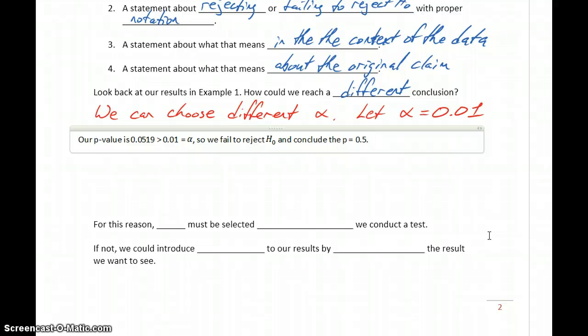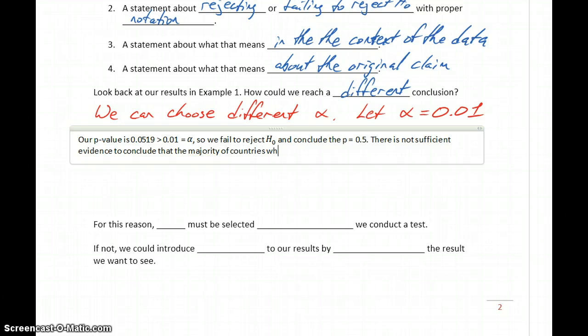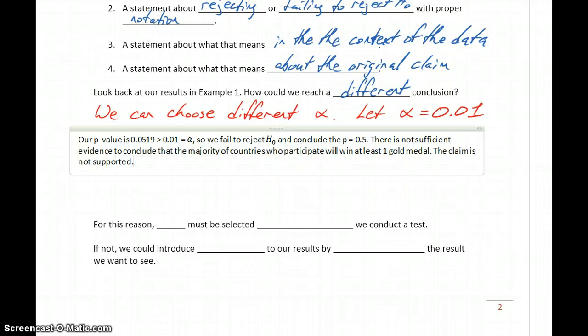So in this case, changing that alpha value leads us to the opposite decision about our null hypothesis. So we'd be saying there is not sufficient evidence to conclude that the majority of countries who participate will win at least one gold medal. So that means in this case the claim is not supported.